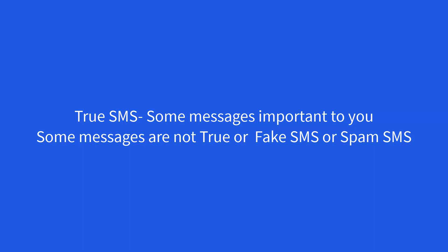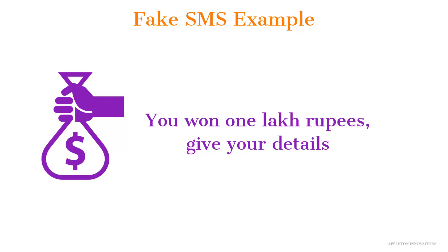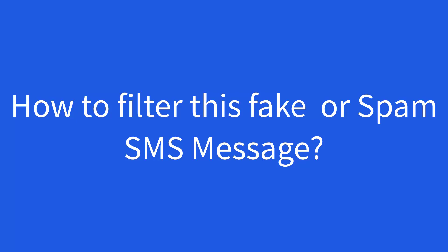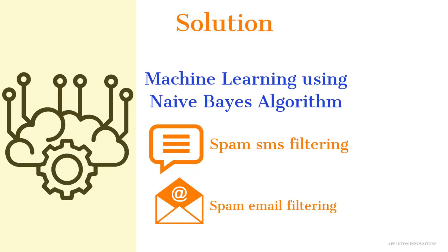An example of a fake message is something like: 'You won 1 lakh rupees — call us and share your details so we will give you the money.' These are fake SMS messages. To filter out such fake messages, we can use Naive Bayes. Naive Bayes is very useful for spam message or spam mail filtering.